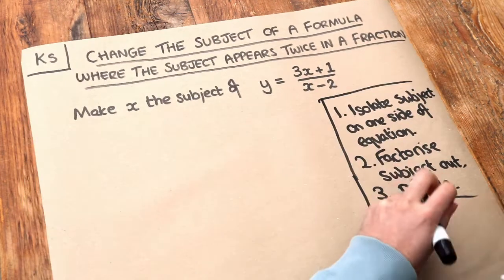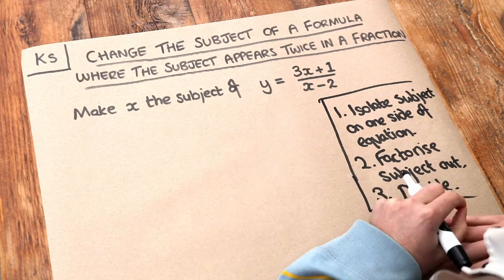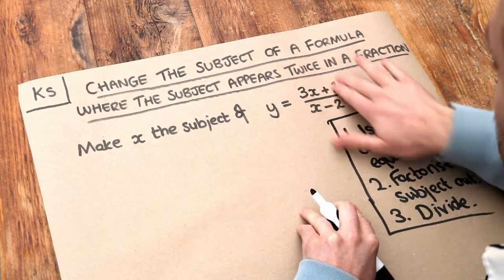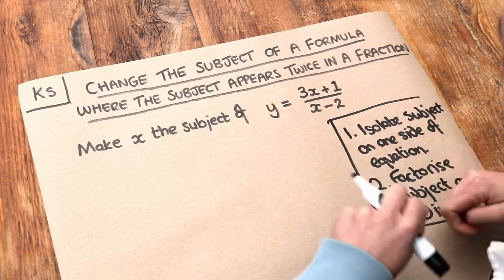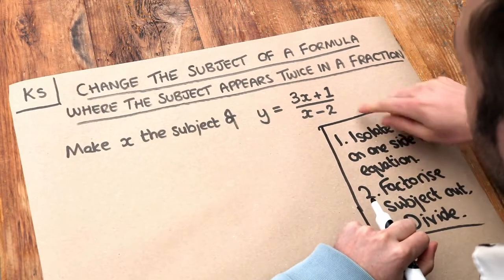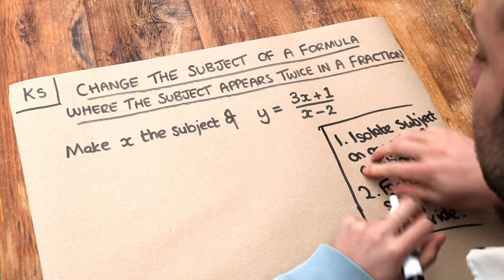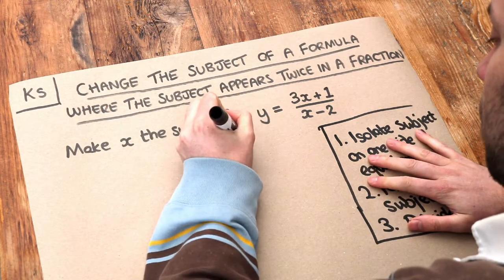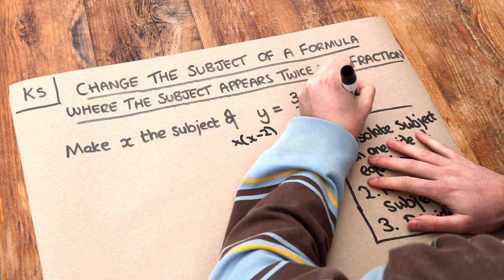So we first need to get all the x terms on one side of the equation. Now because x is currently trapped inside a fraction, a sensible thing to do is to try and get rid of all the fractions to free everything up. To do that, to get rid of that over x minus 2, we can just multiply both sides of the equation by x minus 2.